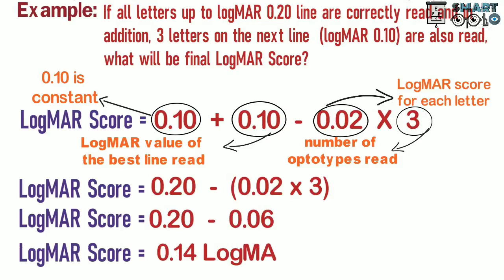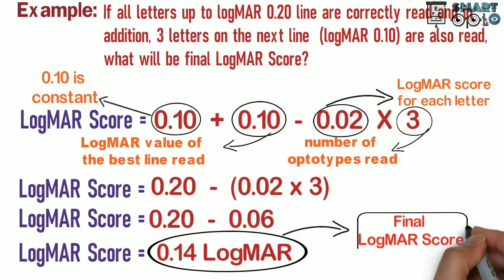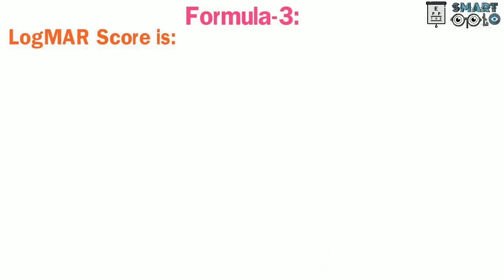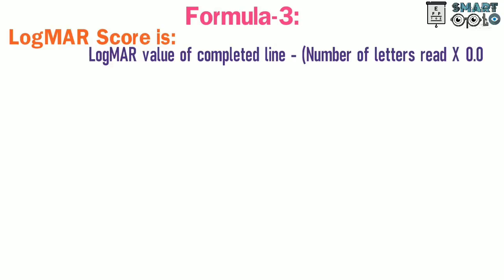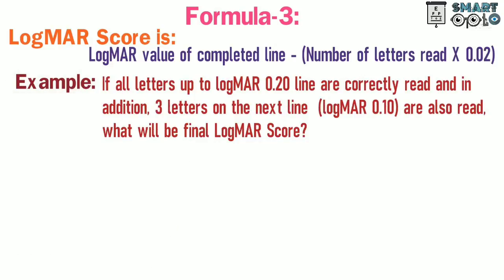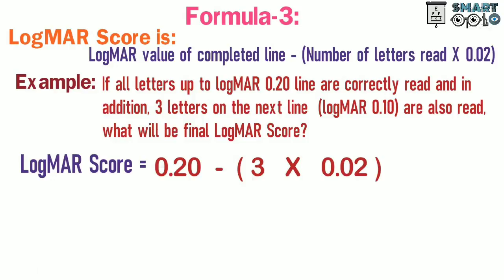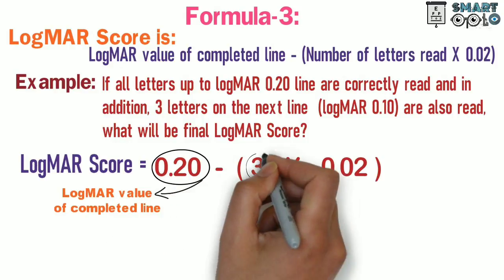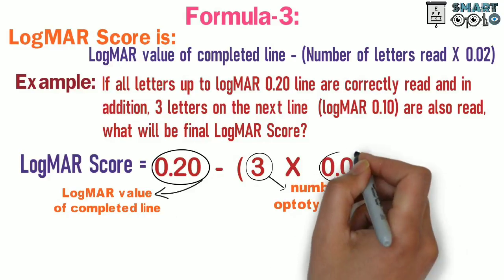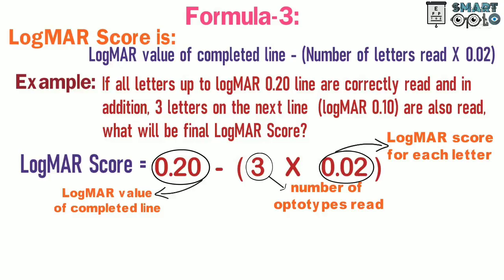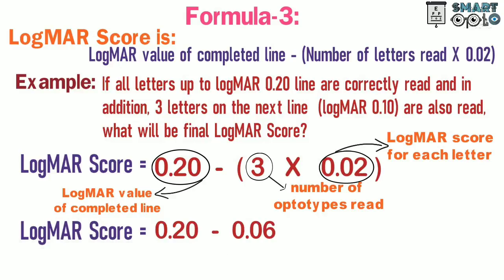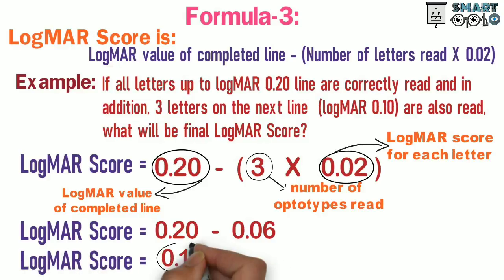Formula 3: LogMAR score = LogMAR value of the completed line − (0.02 × number of optotypes read on the next line). For example, if all letters up to LogMAR 0.20 are correctly read and three letters on the next line (LogMAR 0.10) are also read, then LogMAR score = 0.20 − (3 × 0.02) = 0.20 − 0.06 = 0.14 LogMAR.